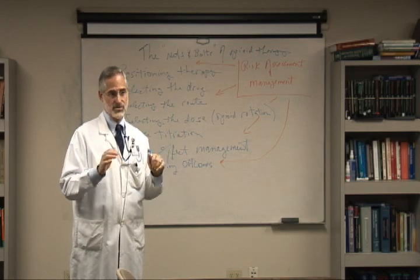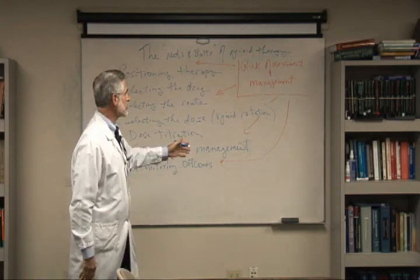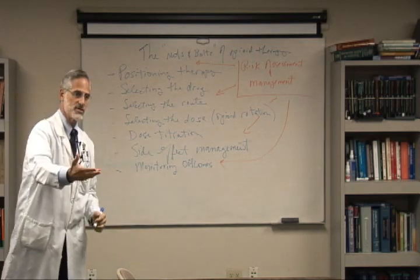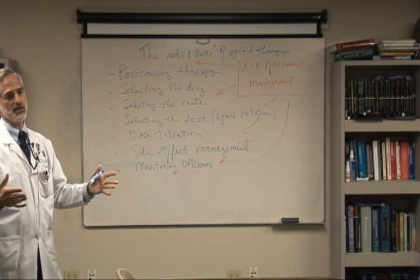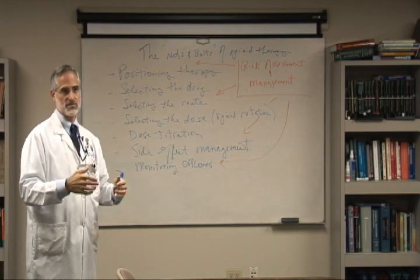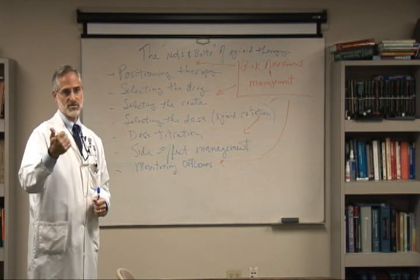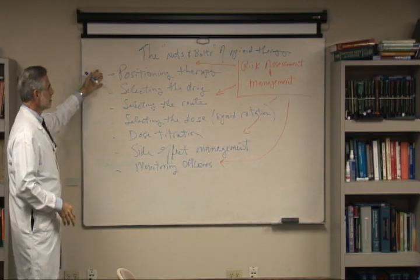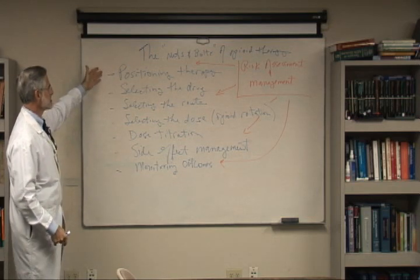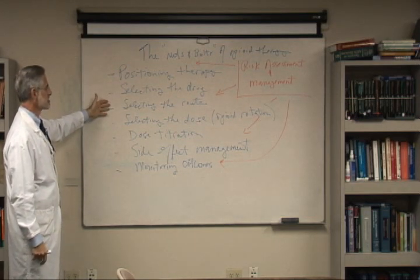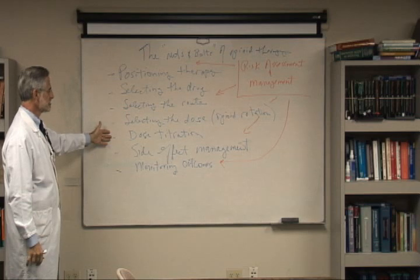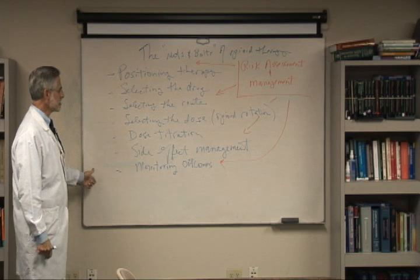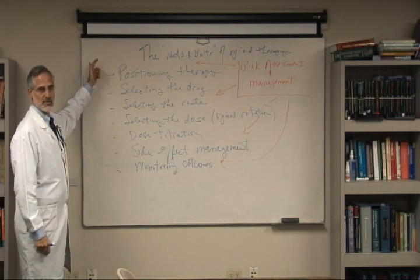So we're not going to talk about risk assessment and management. We're going to talk about the elements of optimizing the analgesic outcomes, minimizing the side effects, ending up with the best therapeutic outcomes in relation to pain control, overall quality of life and function. So you could say that the key elements of this are positioning the therapy, selecting the drugs, selecting the route, selecting the dose, titrating the dose, managing the side effects and monitoring outcomes.